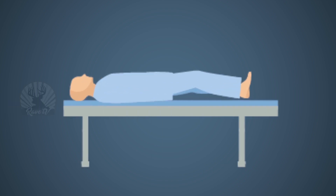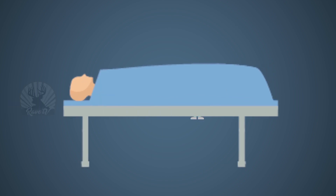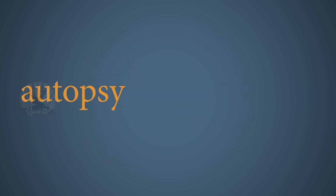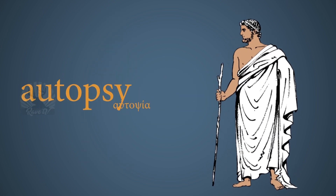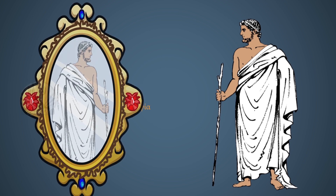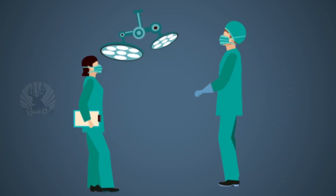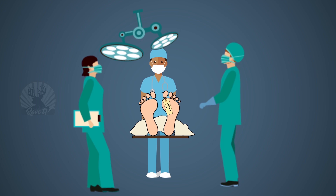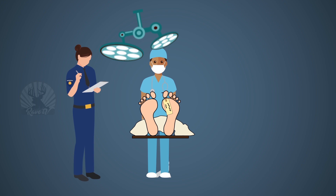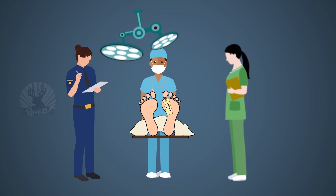Autopsy, also called post-mortem examination, is a specialized surgical procedure of the body of a dead person. The word autopsy comes from the Greek word 'autopsia' which means 'to see for oneself.' Autopsy may be area-specific or whole body examination. There are mainly two types of autopsies: medical-legal autopsy or forensic autopsy, and clinical or pathological autopsies.